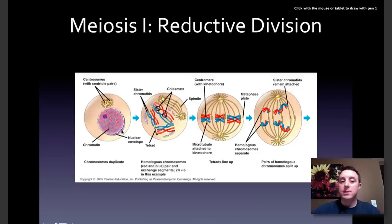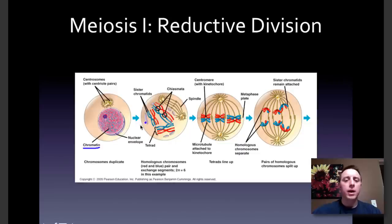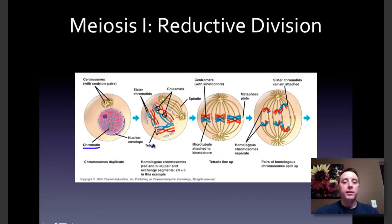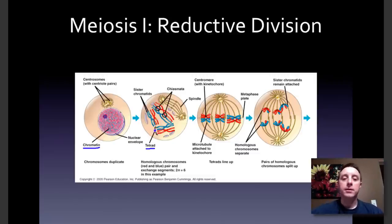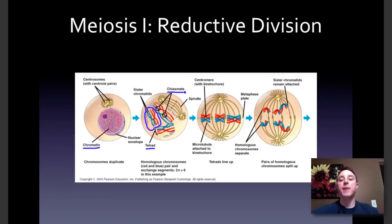We start with an interphase cell where the DNA exists in the chromatin state — all loose and floating around the cell, colored blue and red for the two homologous chromosomes. Then during prophase I, some interesting things happen: tetrads form. A tetrad literally means four — there are four sister chromatids which all line up together as the two homologous chromosomes get together and match up. Something very interesting then happens at structures called the chiasmata, which we'll discuss on the next slide.